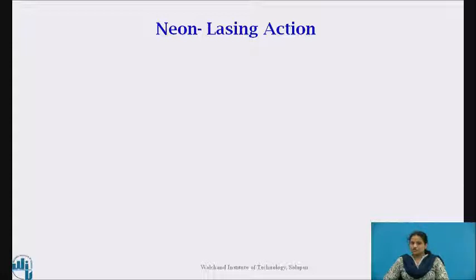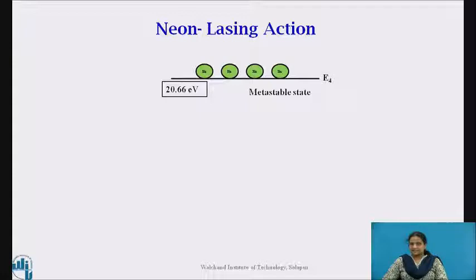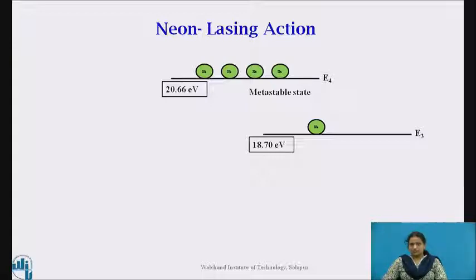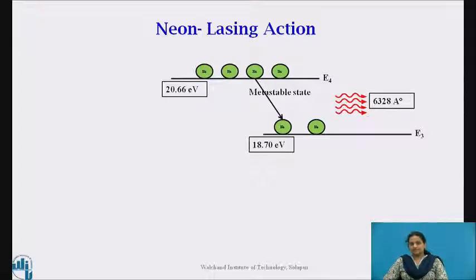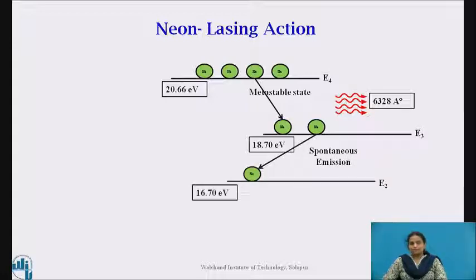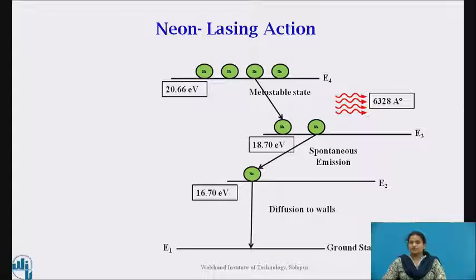Now let us see the transition of neon. The upper state of neon atom E4 is a metastable state, hence neon atoms accumulate in this upper state. The E3 level is sparsely populated at ordinary temperatures. As the population at the higher energy level E4 is greater than the population at lower energy level E3, a state of population inversion is established between E4 and E3. Thus, the transition between E4 and E3 generates a laser beam of wavelength 6,328 angstrom units. From level E3, the neon atoms drop to level E2 spontaneously. E2 is a metastable state; consequently, neon atoms tend to accumulate at this level.